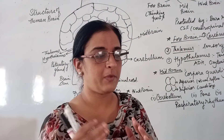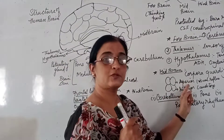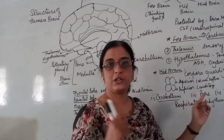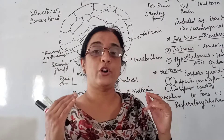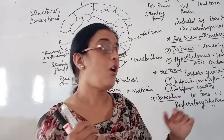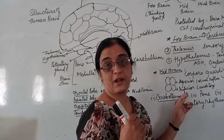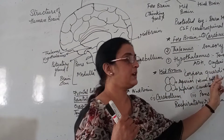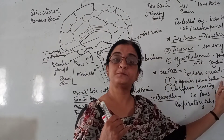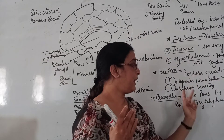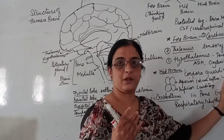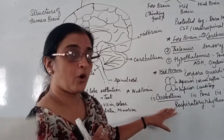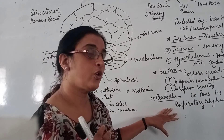The forebrain is the center of intelligence, attention, and memory. This is the thinking part of our body, which has many memories and thinking powers. The first part of the forebrain is the cerebrum, which is the biggest part of the brain, occupying four-fifths of the brain.